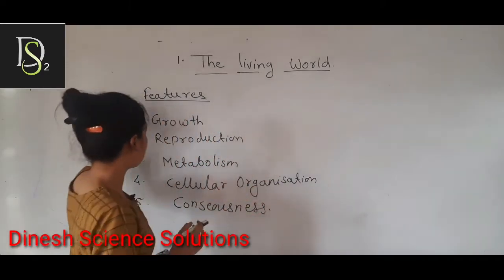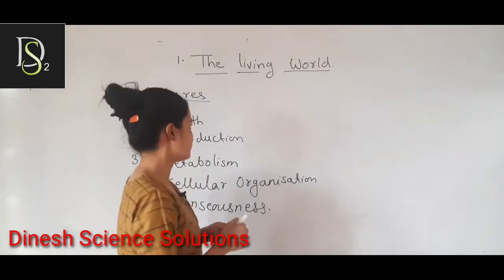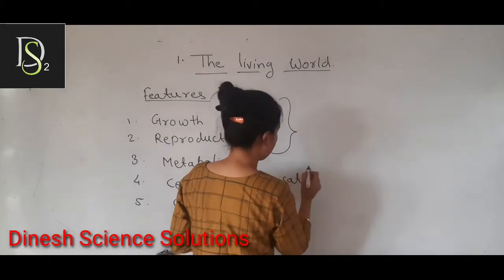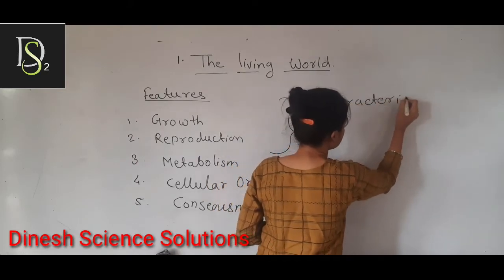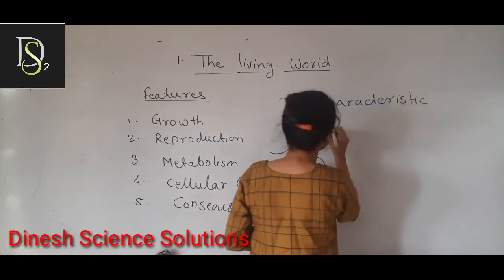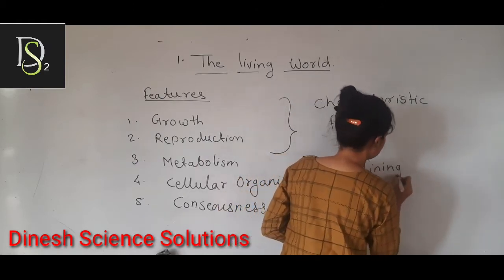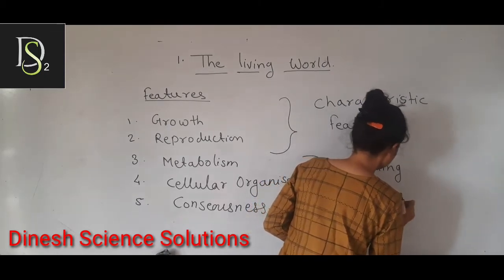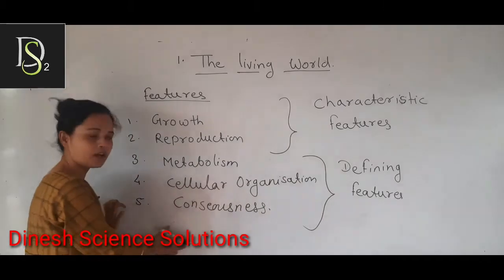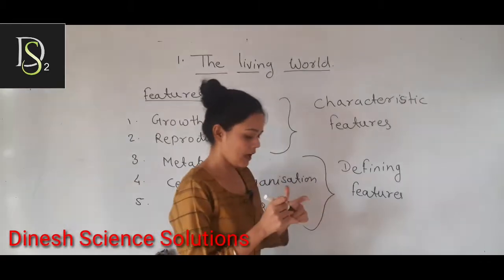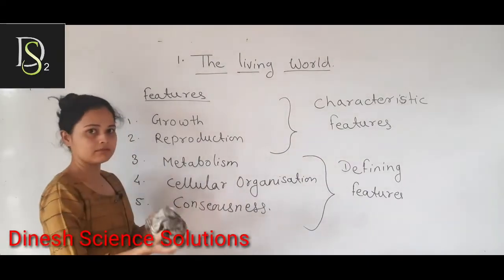If we see the features of each organism, then we will say it is living. In the NCERT book, there are two types of concepts: Characteristic features and Defining features. Growth and Reproduction are characteristic features. Metabolism, Cellular Organization, and Consciousness are the defining features. Now let's see the difference. First, let's see Growth.